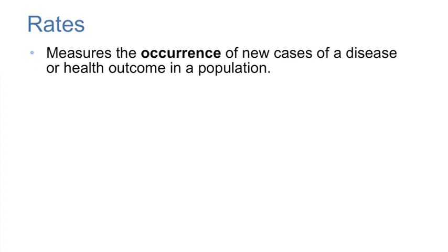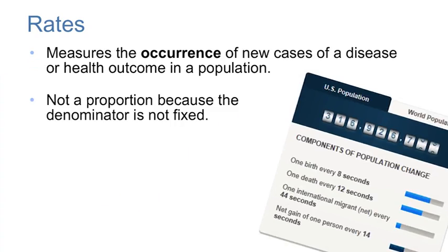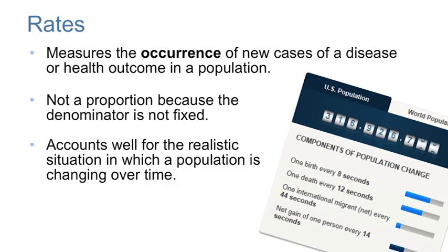A rate measures the occurrence of new cases of a health outcome in a population. A rate is not a proportion because the denominator is not fixed. Instead, a rate accounts well for the realistic situation in which a population is dynamic and changing over time.